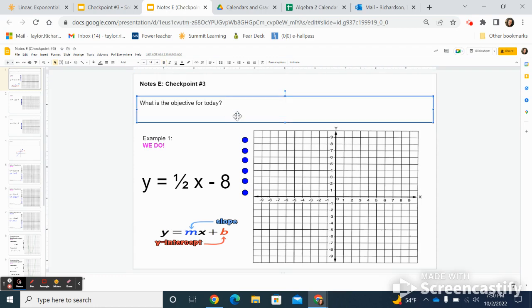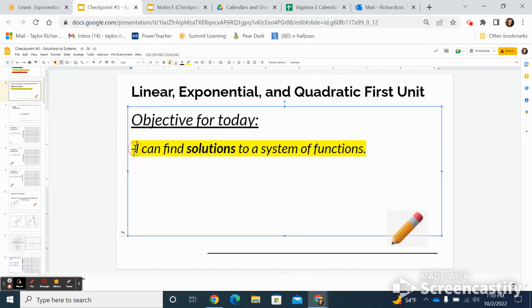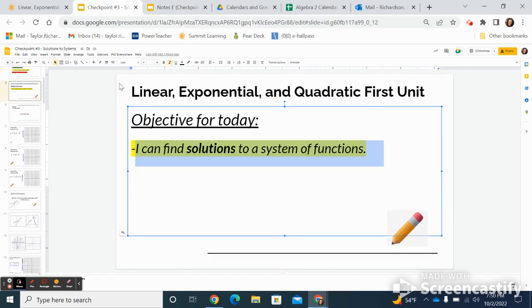We're going to start with the objective for today. It's a really short one. In your notes, go ahead and put this yellow sentence in that first box for what is the objective. The objective is I can find solutions to a system of functions. Remember, we're using graphs, but we're going to use our graph to find solutions.